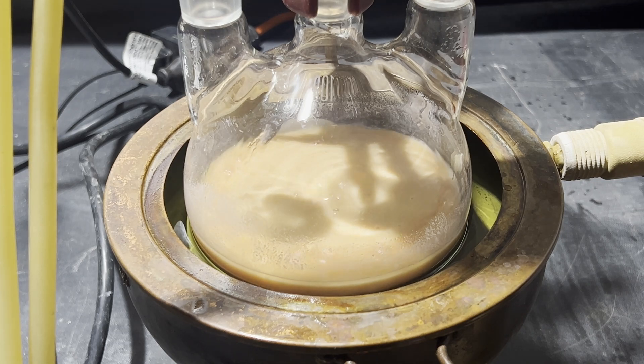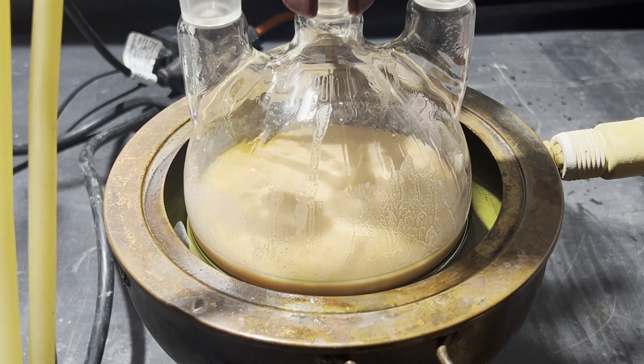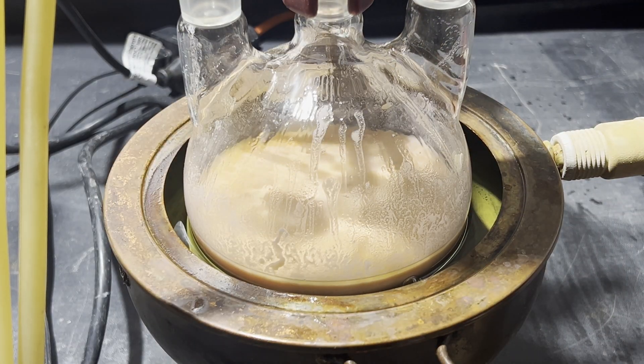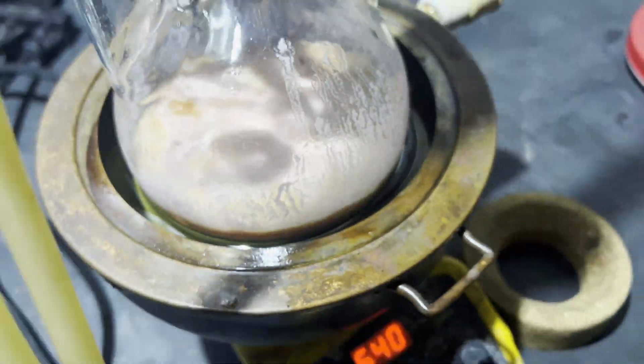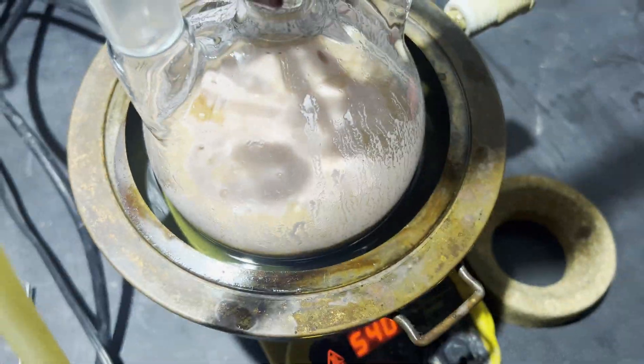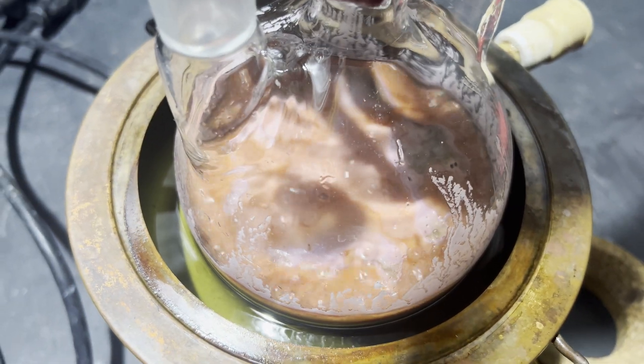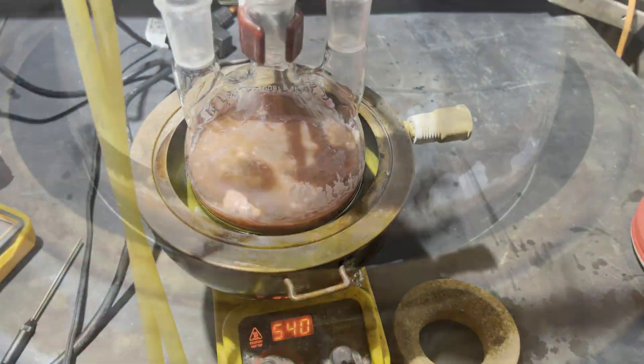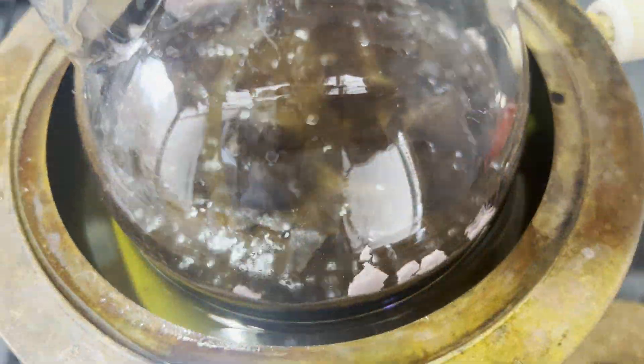After adding the diester, a thick precipitate forms, so there's no way magnetic stirring could be used. Then, I refluxed the mixture for 24 hours straight. A few times, I lifted the flask out of the bath and shook it a bit, but I don't think it was necessary. It was more for a false sense of security.